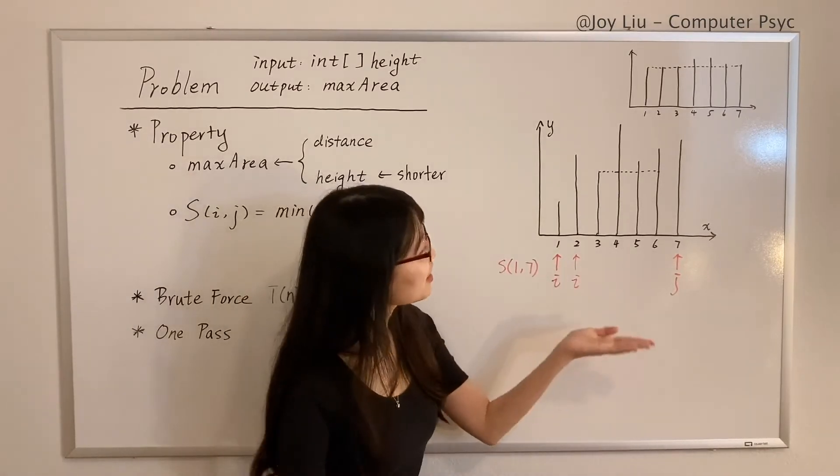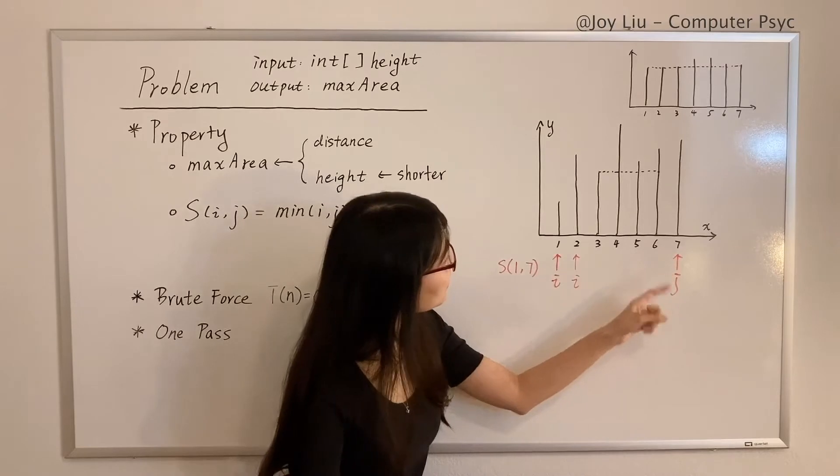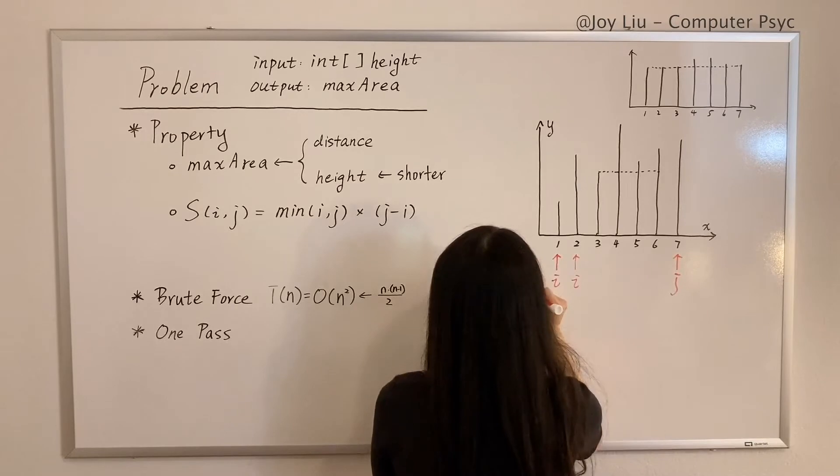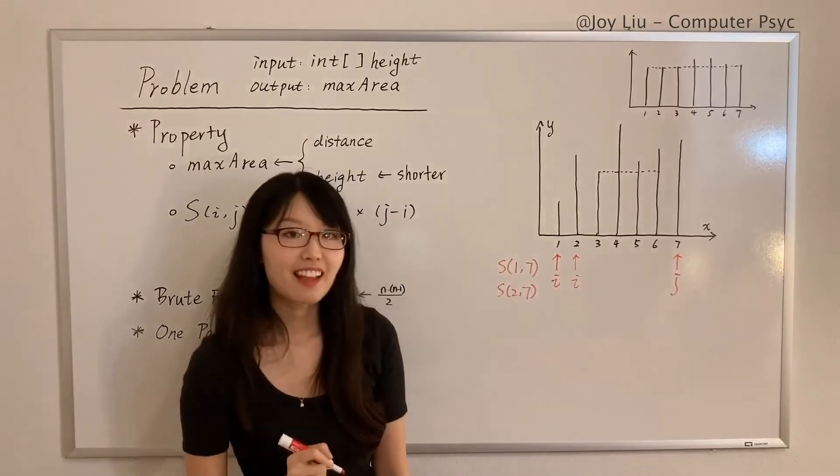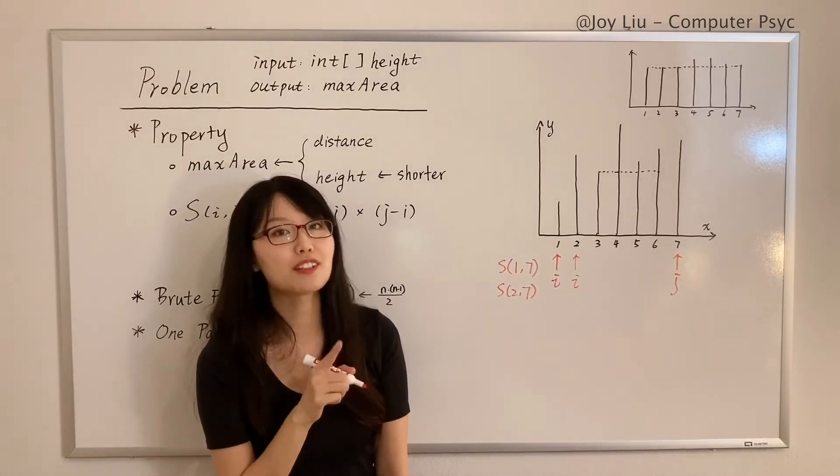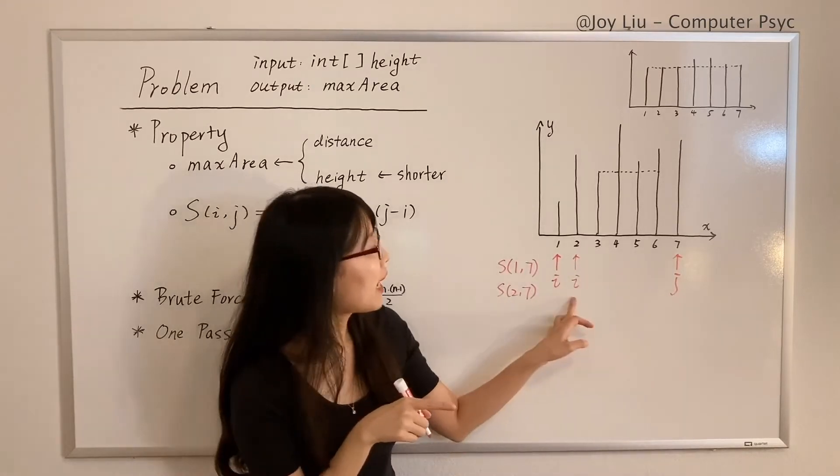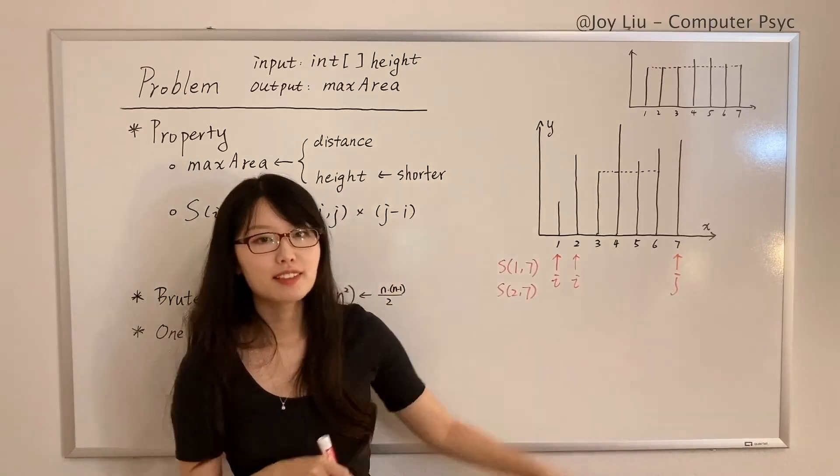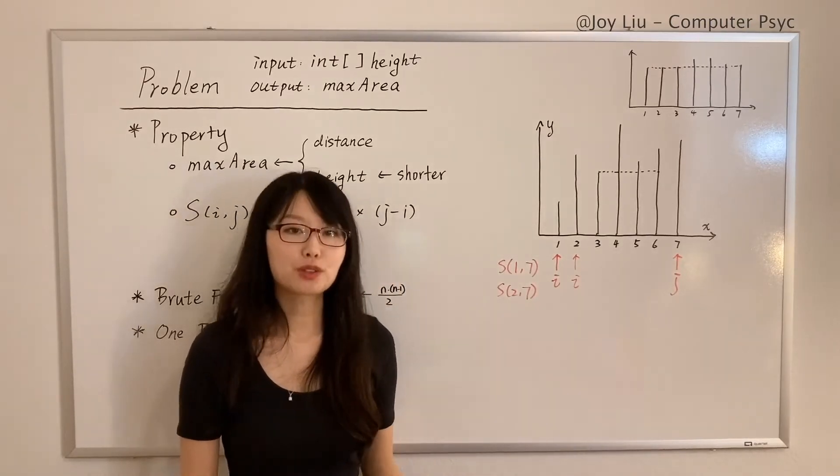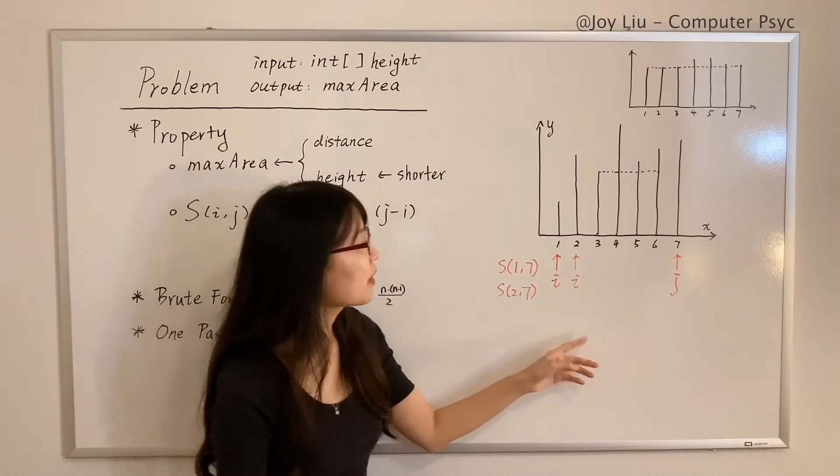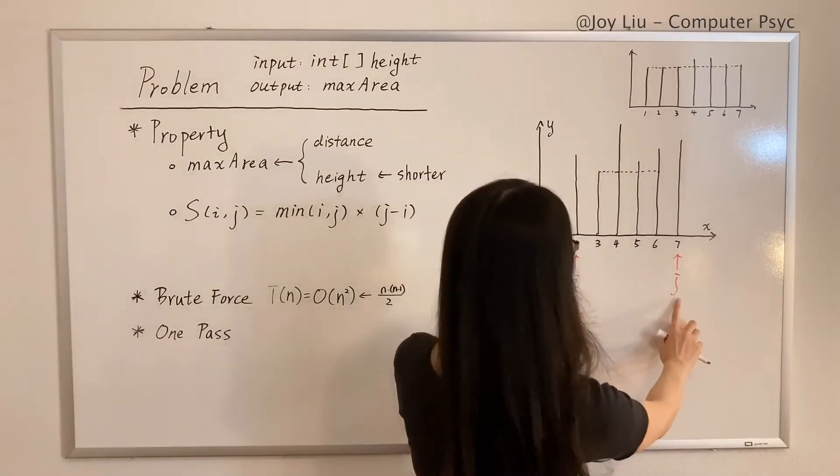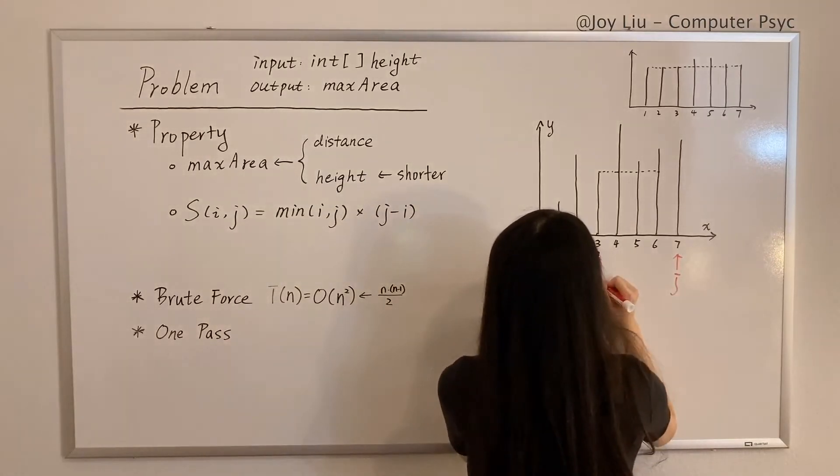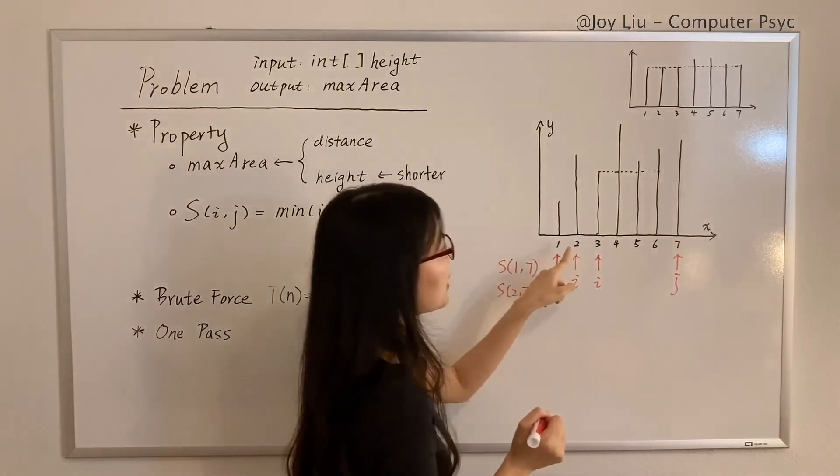So now i is here, but j we keep in its place. So now we have a new container of (2,7). And let me just write it down: (2,7). In this way, we always move the shorter one to the next integer. So i moves to the right and j moves to the left, and we check the area of the new container.